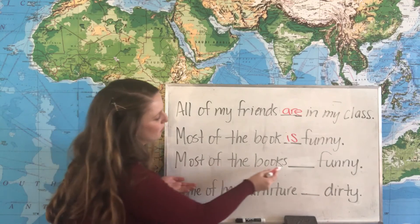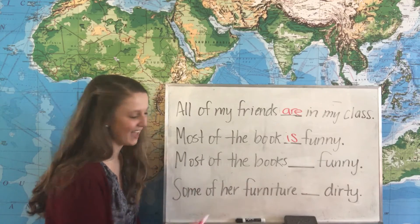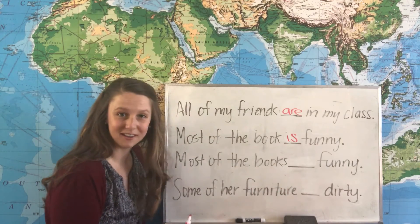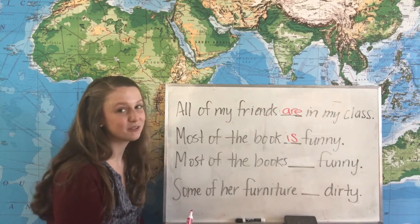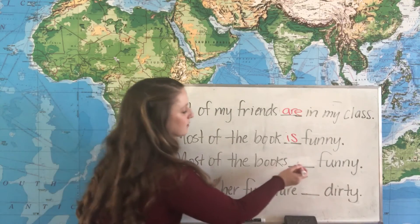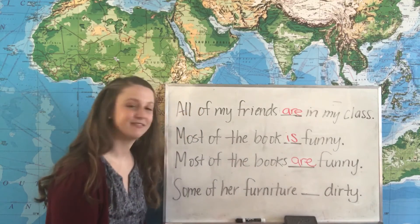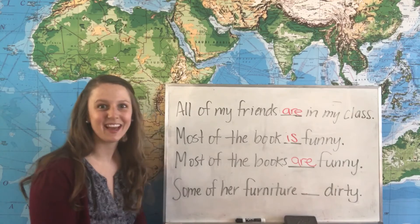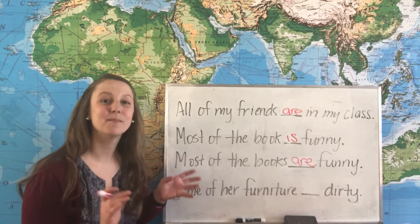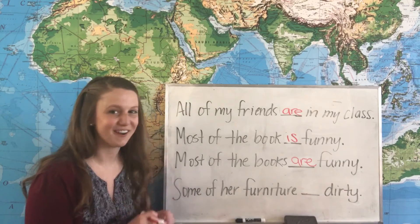Our next example is similar but has a small difference: 'Most of the books funny.' In this case, the books is plural, so we use the plural form of the verb: 'Most of the books are funny.' This means we are looking at a big group of many books and most of them are funny, but some of the books are not funny.